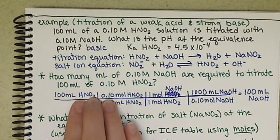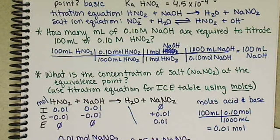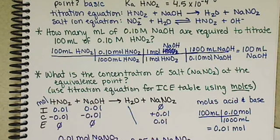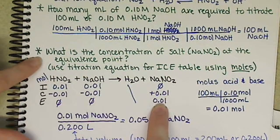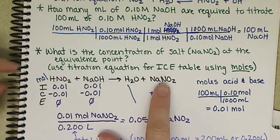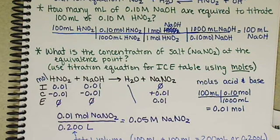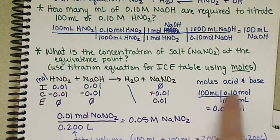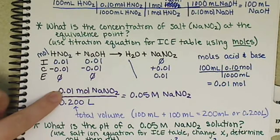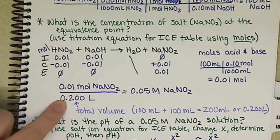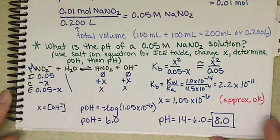We then determined our volume that was required to titrate our acid. And that was just using stoichiometry and our molarity as a conversion factor. Then we determined our end concentration for our NaNO2 for the salt. And we had to use an ICE table that used moles because we had a volume of acid and a volume of base. So we used the same calculation for both the acid and the base. Took our ending moles of NaNO2 divided by our total volume to get our concentration. Which we then could use to determine the pH of the solution.